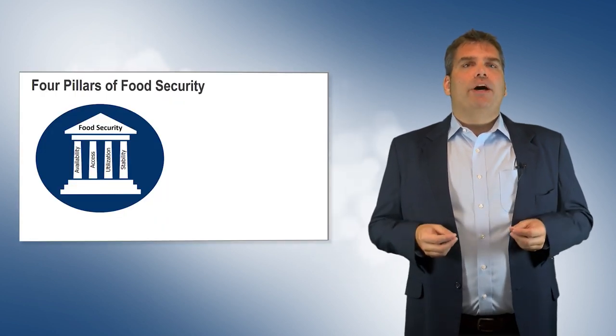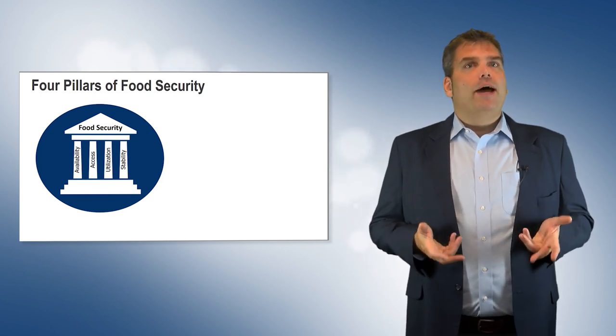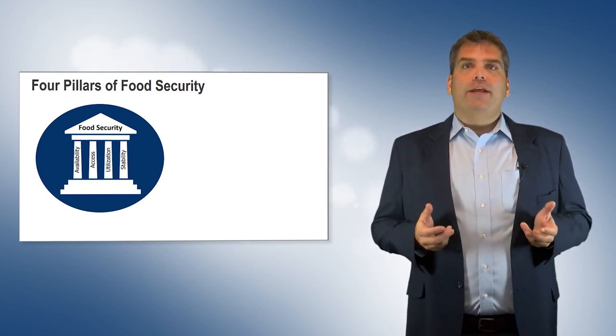Food security can be evaluated by four metrics. They are availability, access, utilization, and stability.